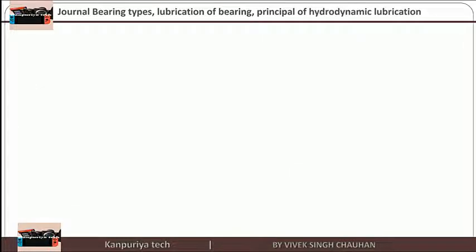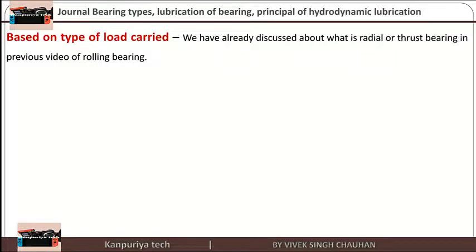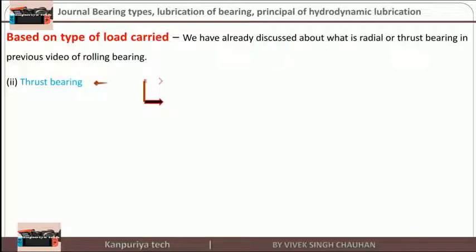Let us talk about classification based on type of load carried. We have already discussed radial and thrust bearings in the previous video on rolling contact bearings. The thrust bearing is divided into two types: the first one is the footstep or pivot bearing.